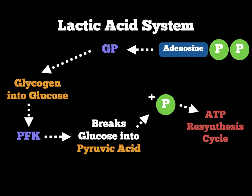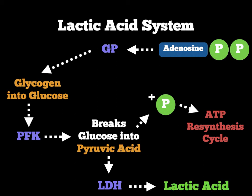However, because pyruvic acid is now present in the body after glucose has been broken down, this is a harmful substance to the body if present in large quantities. The body immediately tries to break pyruvic acid down. The presence of pyruvic acid stimulates another enzyme called LDH, which breaks pyruvic acid into a different substance called lactic acid. If we have too much lactic acid, it can stop muscle function, and it slowly builds in the body through this system.